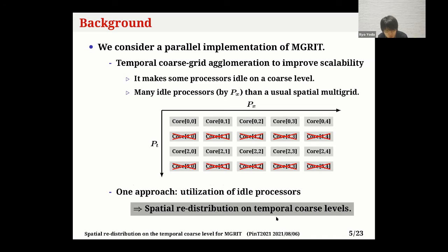I would like to consider the parallel implementation of the MGRIT method. To take advantage of MGRIT's high parallelism, temporal coarse-grid agglomeration is sometimes used. This method makes some processors idle on a temporal coarse level in order to improve scalability. Agglomeration techniques are widely used for spatial multigrid methods. However, there is a difference in temporal agglomeration.